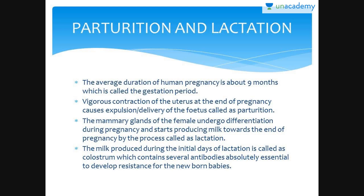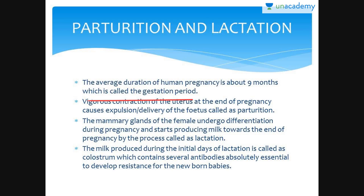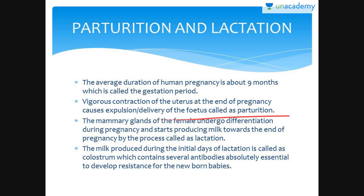The average duration of human pregnancy is about 9 months, which is also called the gestation period. Vigorous contraction of the uterus at the end of pregnancy causes expulsion and delivery of the fetus, called parturition.